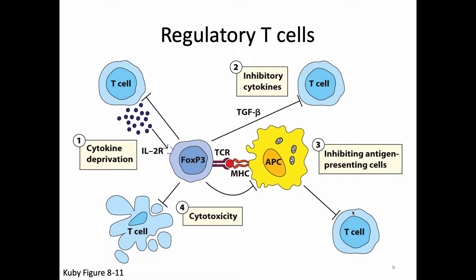We do know that Tregs can make inhibitory cytokines to inhibit other T cells or antigen-presenting cells. Also, because they have so much CD25, they can soak up all the IL-2 and deprive other cells of it — basically acting as an IL-2 sink. Regulatory T cells are thought to be incredibly important in many immune-mediated diseases.